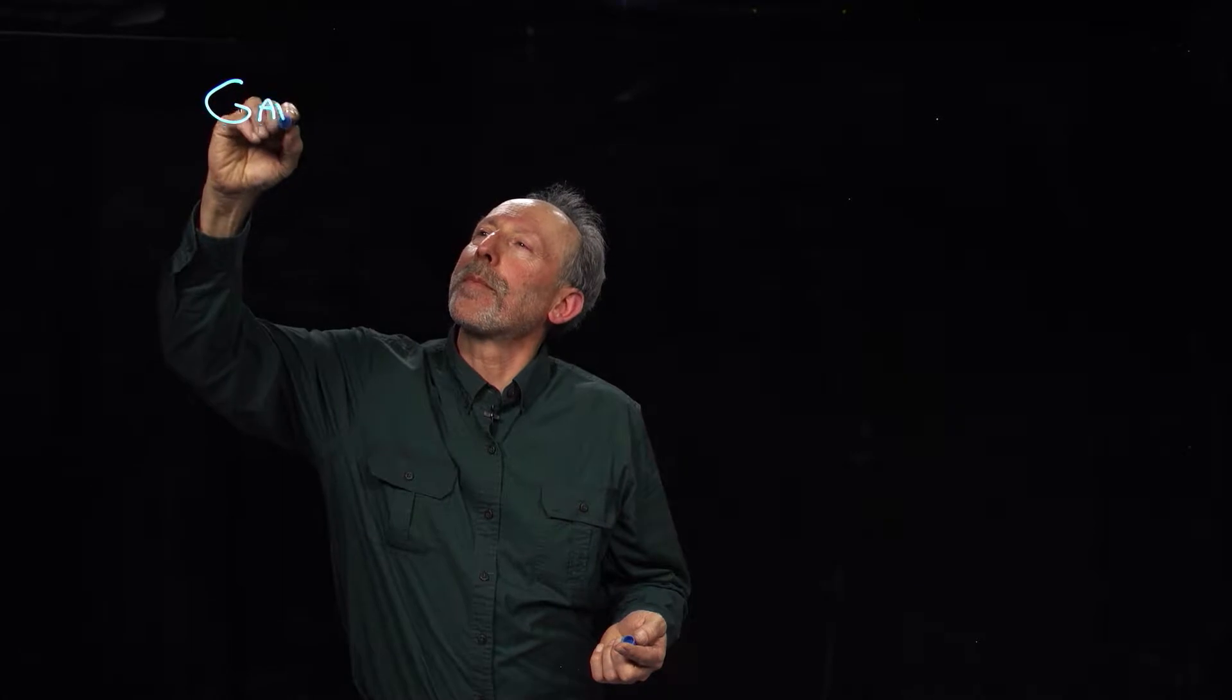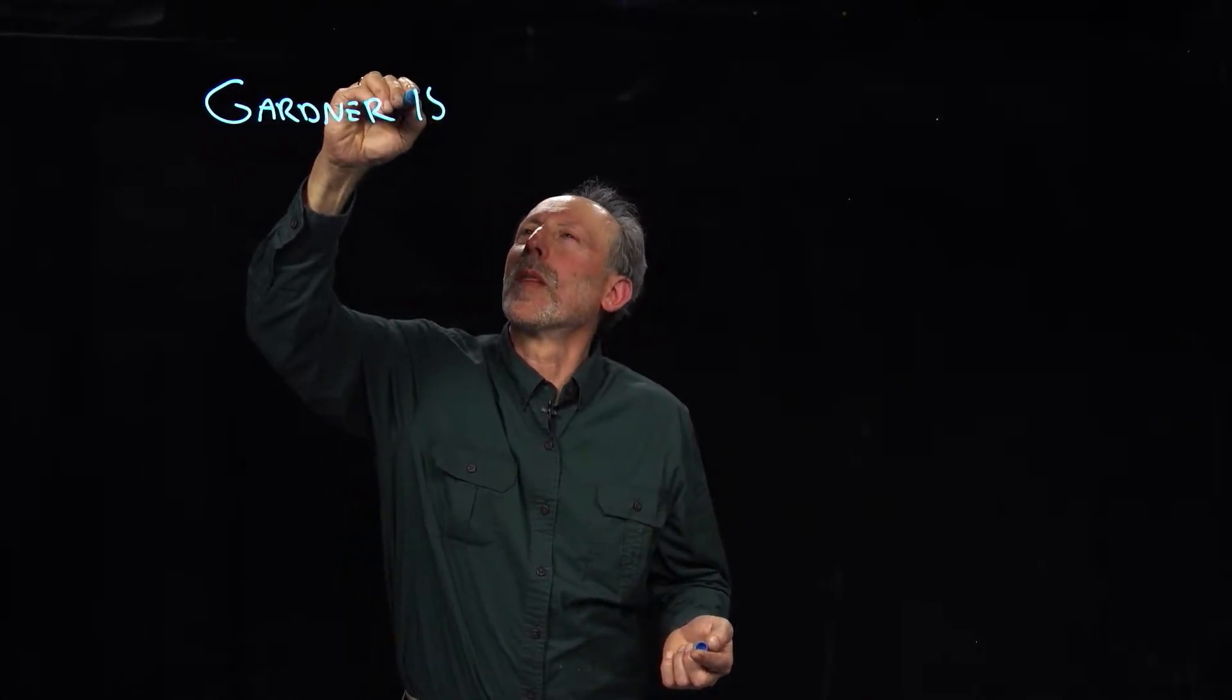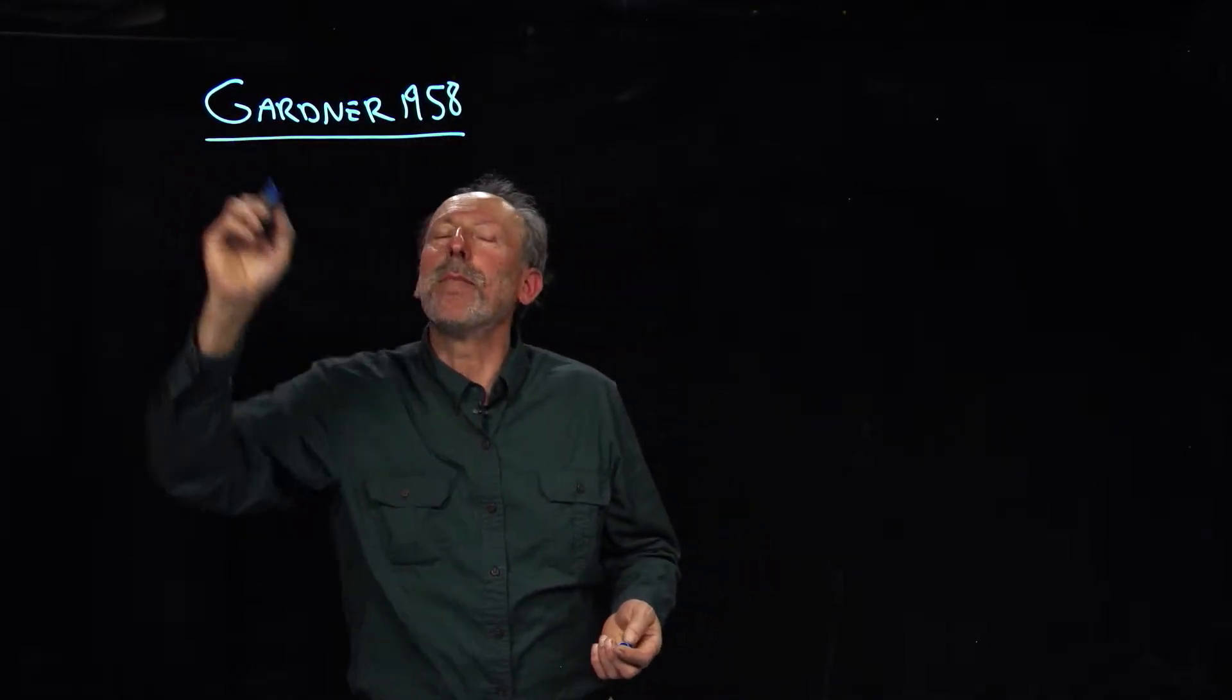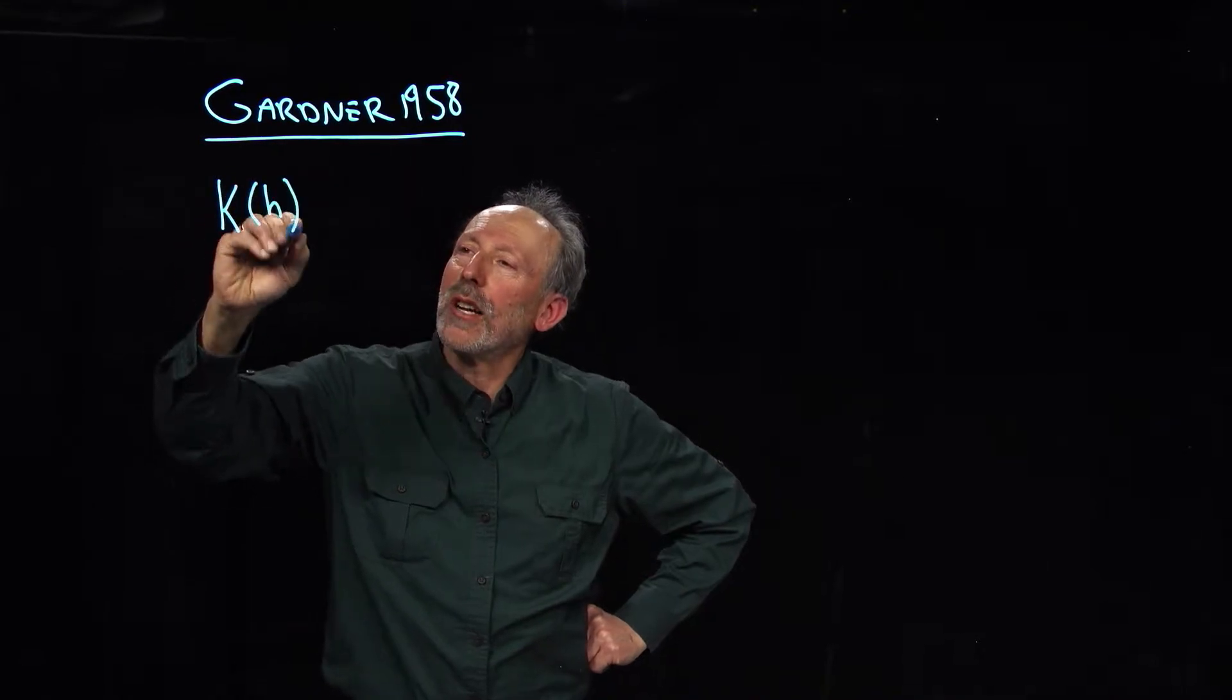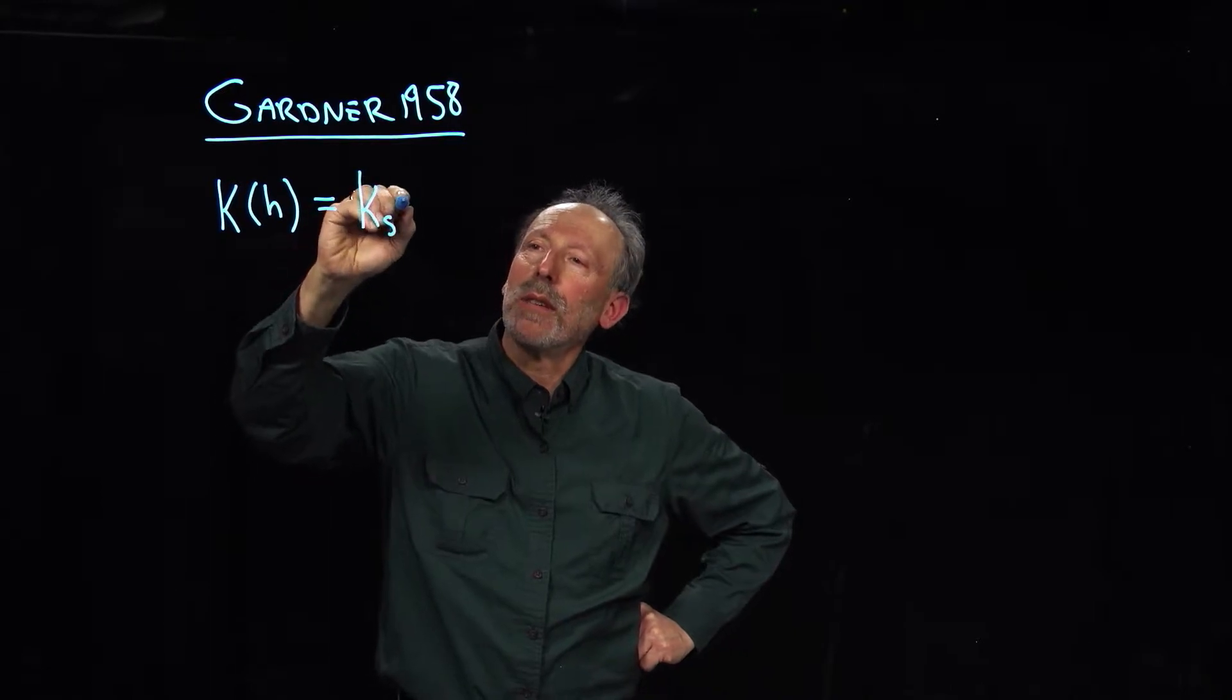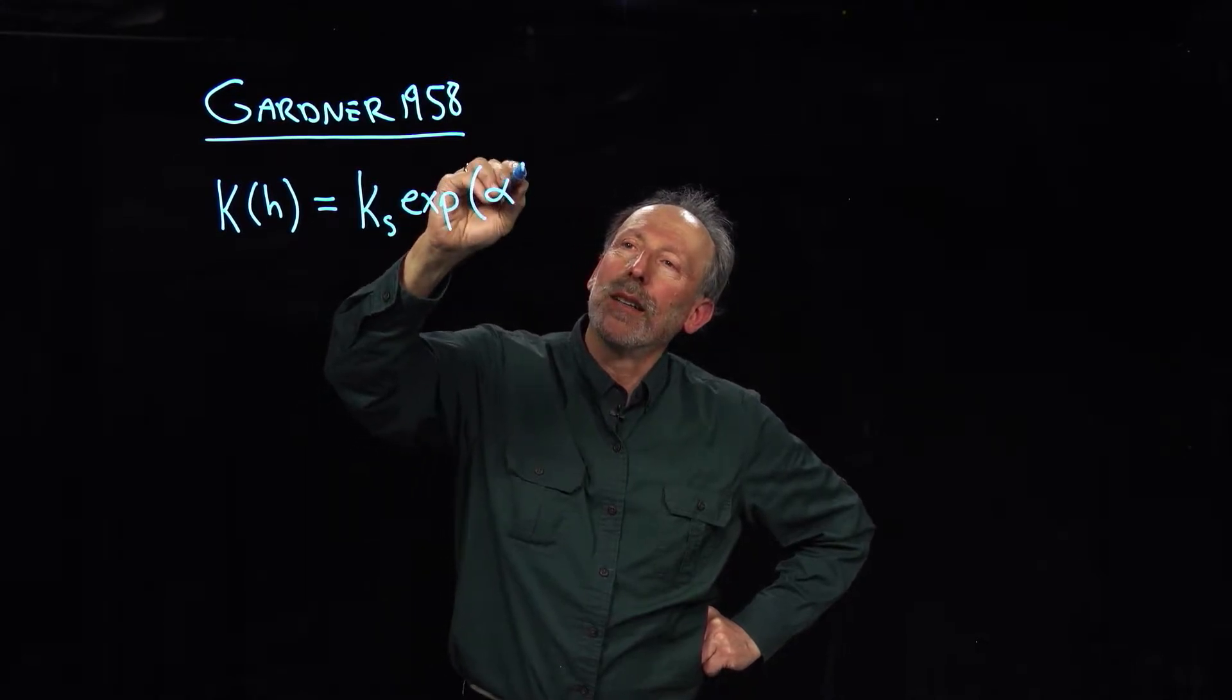And one of the things that is often needed is to describe how water moves in soil very simply. And so Gardner in 1958 came up with a really simple equation for hydraulic conductivity. He said, what if we call the hydraulic conductivity, and we're gonna write it as a function of pressure, equal to the saturated conductivity times the exponential of some alpha times h.